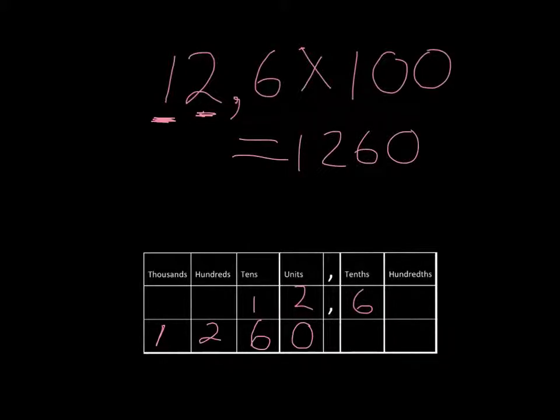The simple way, the quick way, using the trick to do this would be to say, we can write 12 comma 6 as 12 comma 6,0. Putting a zero on the end doesn't change things at all. If we are multiplying by 100, we need to take that decimal comma and move it over 1, 2 places, so that it shifts everything up by two decimal place values. And we get our answer 1,2,6,0.